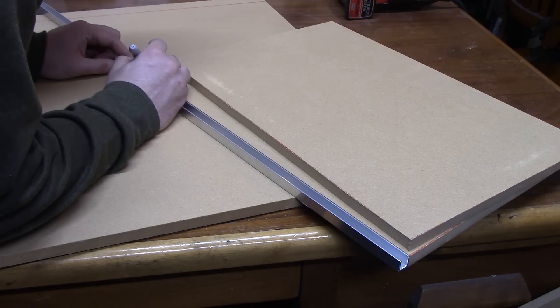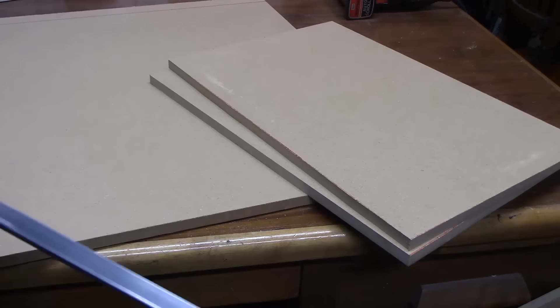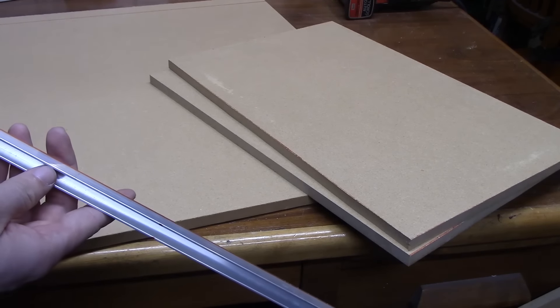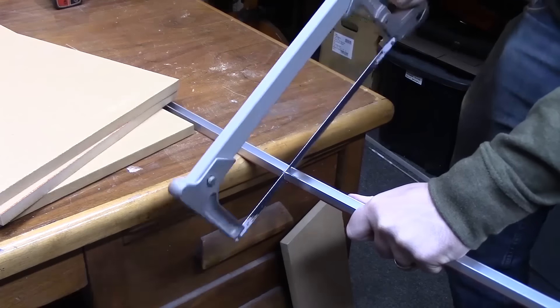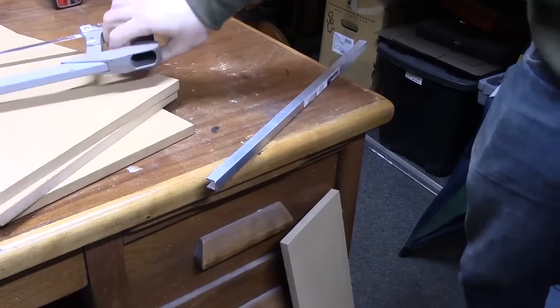Once all your MDF is cut down to the size that you want it to be, it's time to cut the aluminum U-channel to be the same size as the slot that you just cut in the MDF. And now that that's finished, you can kind of see where this is going.